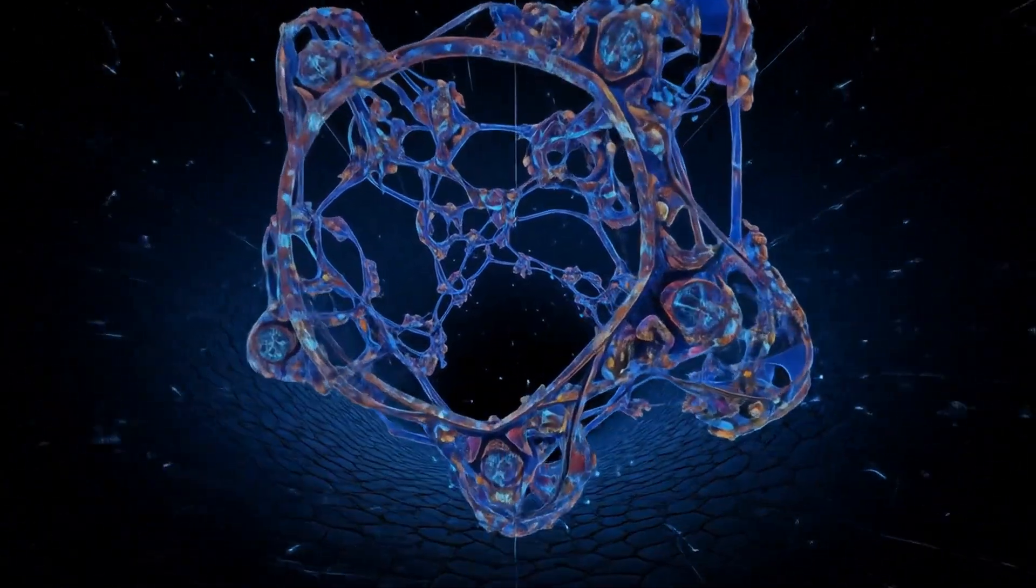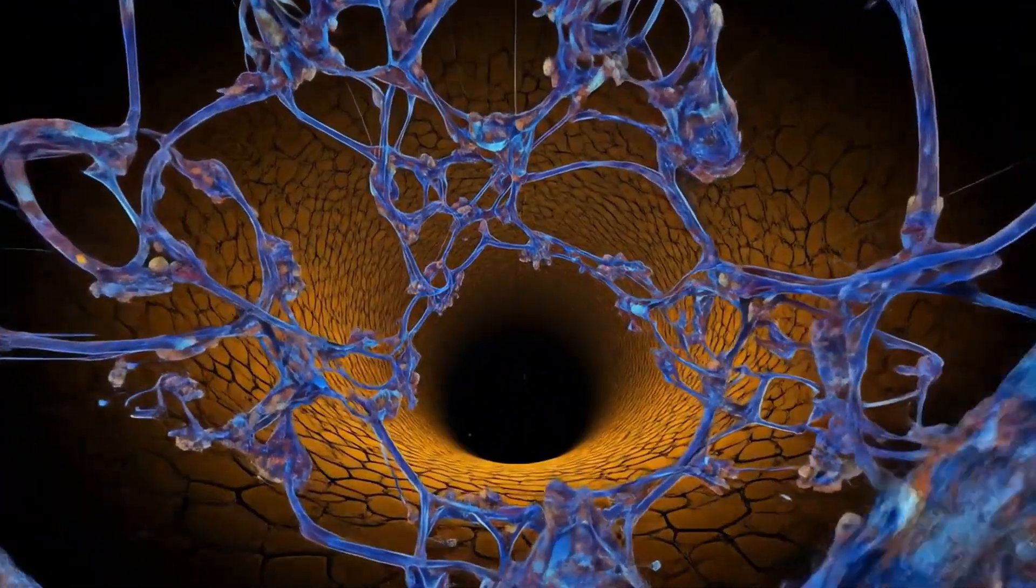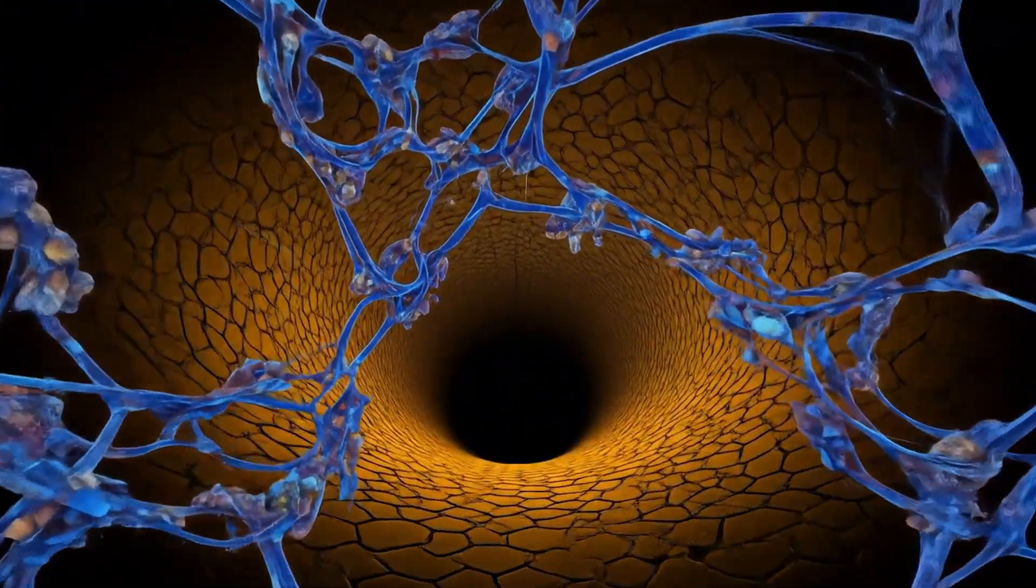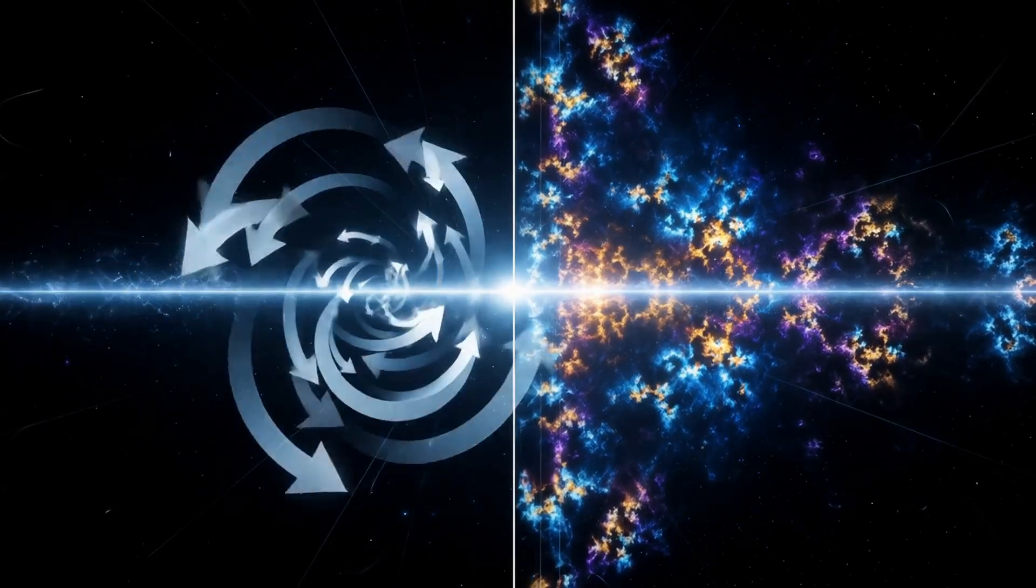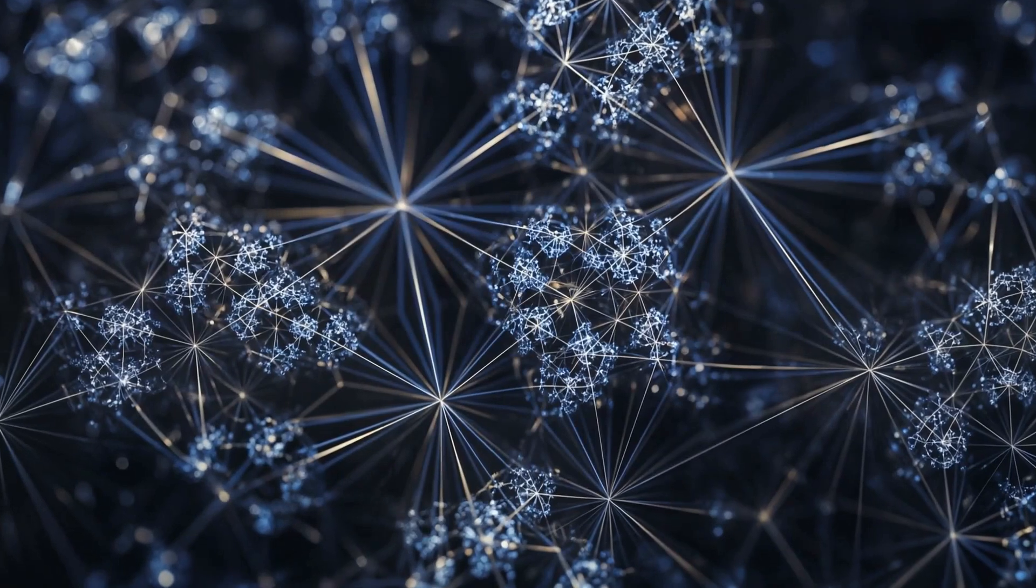The fractal refinement begins. On the left, each quantum state vector feeds back into itself, squaring in amplitude and adding the constant that encodes the scene. This recursive folding sharpens the geometry at every scale.